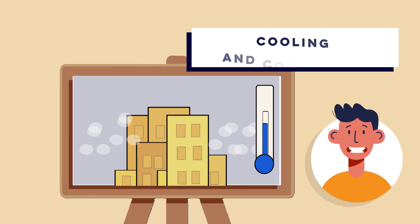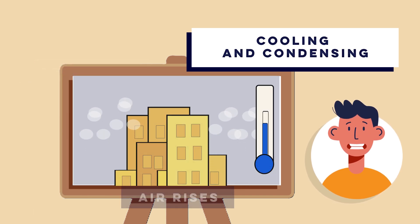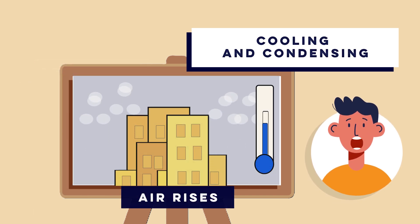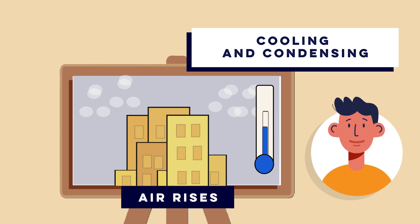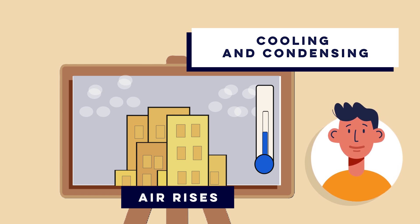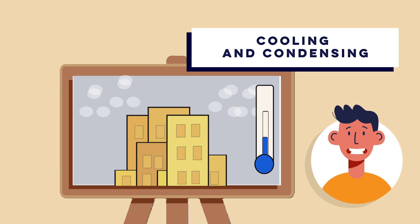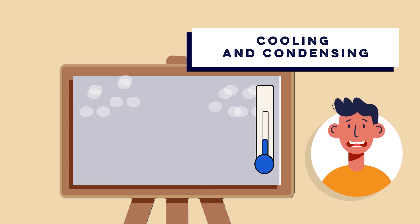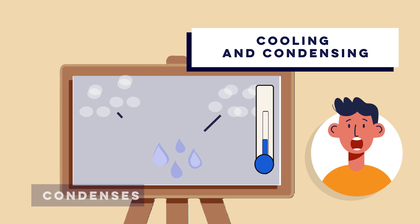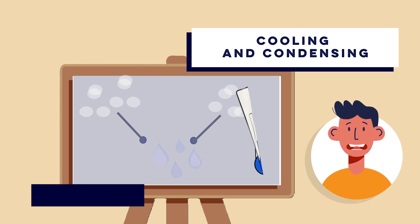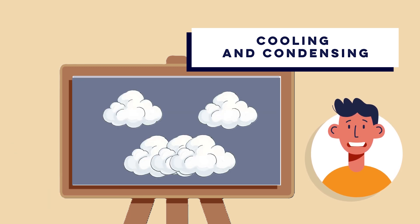Step three: cooling and condensing. As the warm air rises, it cools down. The higher it goes, the lower the temperature. When it's cool enough, the water vapor in the air condenses into tiny water droplets, forming clouds.